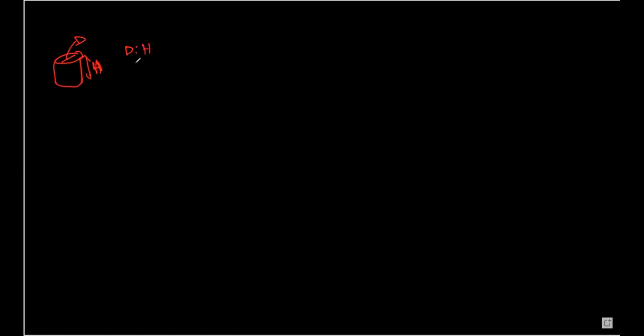The problem from our tutorial is to find the dimensions of a riser. We've been informed that the riser is cylindrical, so this is the second question we are not able to solve. The riser has a diameter and a height. What we know is that the diameter-to-height ratio for the riser needs to be one-to-one — so essentially, diameter is equal to height for our cylindrical riser.